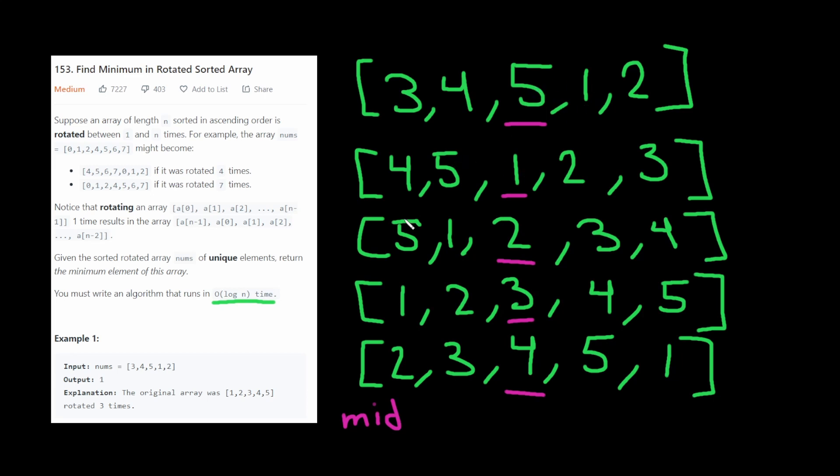And the inflection point is when the number goes from the maximum to the minimum. So five to one here, five to one here, five to one here, technically it'd be five one here, five one here. Right? So we want to find that inflection point and return the minimum from that.